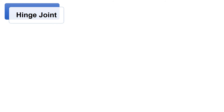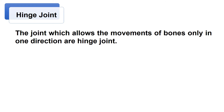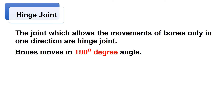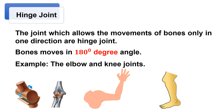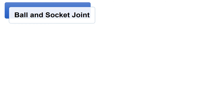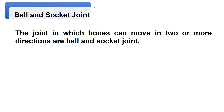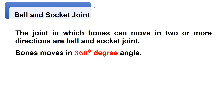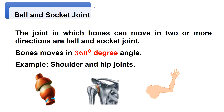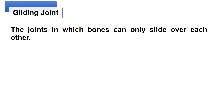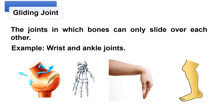Hinge joint: this type of joint allows the movement of bones only in one direction. In this type of joint, bones move in a 180-degree angle. Examples are the elbow and knee joints. Ball and socket joint: the joint in which bones can move in two or more directions. Bones in this joint move in a 360-degree angle. Examples are the shoulder and hip joints. Gliding joint: the joint in which bones can only slide over each other. Examples are the wrist and ankle joints.